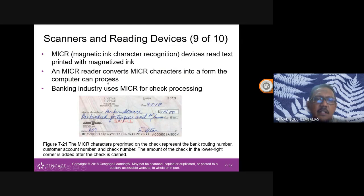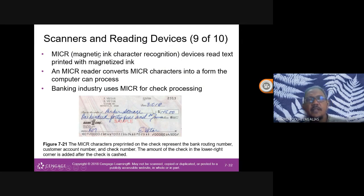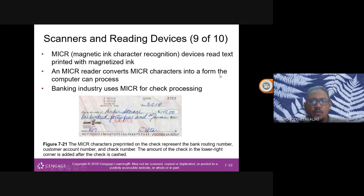Another reading device is MICR — Magnetic Ink Character Recognition — designed for check processing. MICR devices read text printed with magnetized ink, such as the numbers at the bottom of a check. An MICR reader converts MICR characters into a form the computer can process. Banking institutions use MICR for check processing.